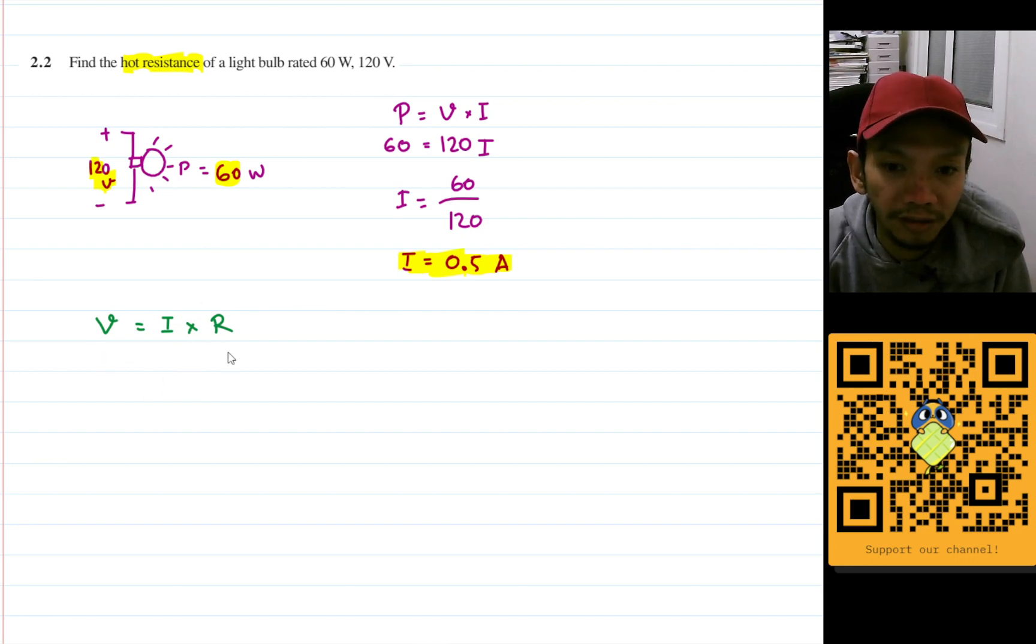So we should be able to find out the resistance here. The voltage here will be 120 and the current here will be 0.5, and we are looking for R. What is R? R is 120 divided by 0.5.